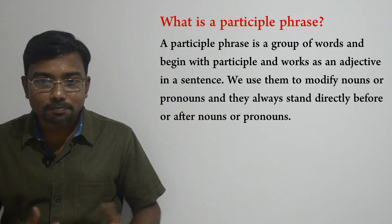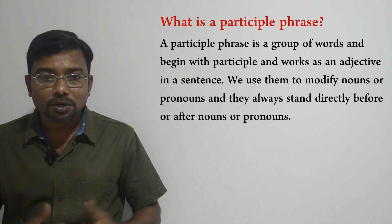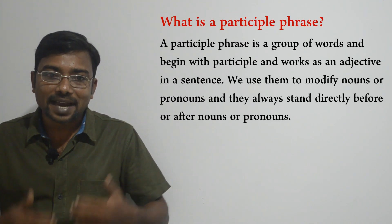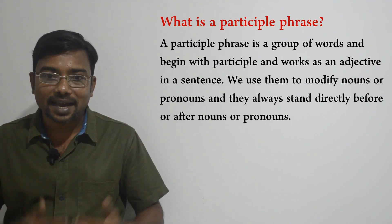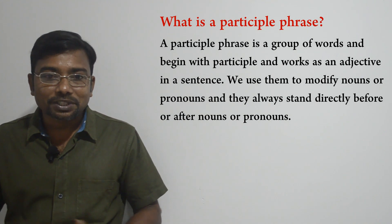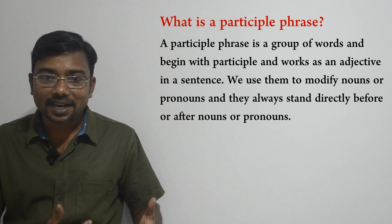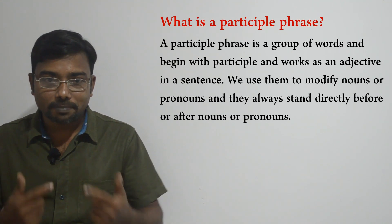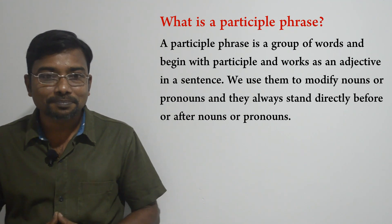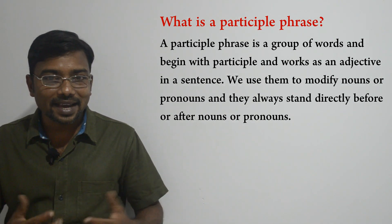Now in this lesson we are going to consider what is a participle phrase. A phrase is a group of words without a subject-verb combination. So a participle phrase is also a group of words without a subject-verb combination that starts with a participle and works as an adjective in the sentence. We use them to modify a noun or pronoun, and they usually stand directly before or after the noun or pronoun. They can appear at the beginning, middle, or end of the sentence.